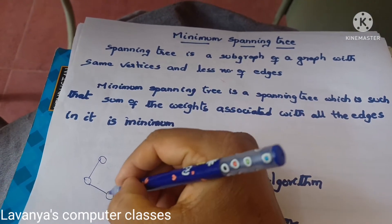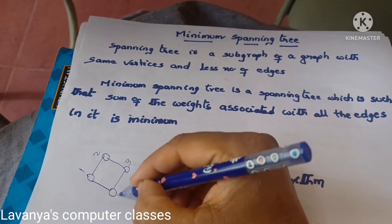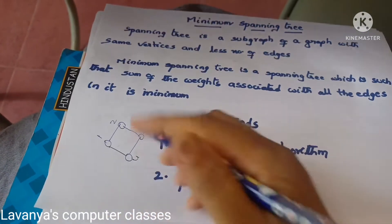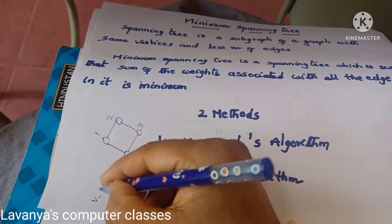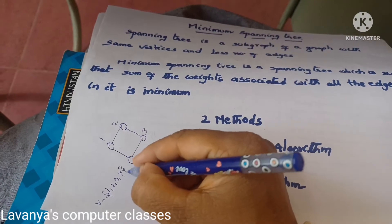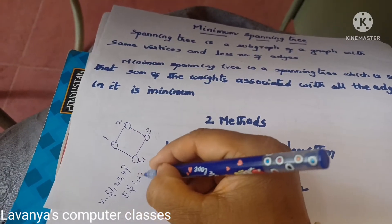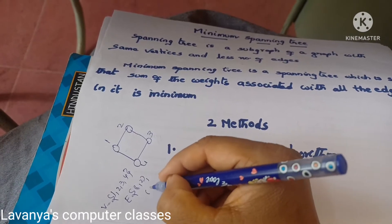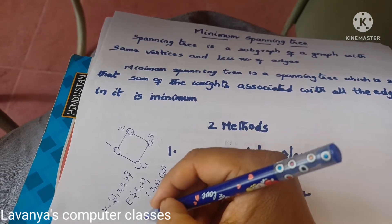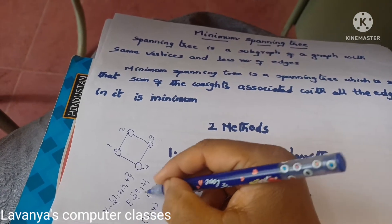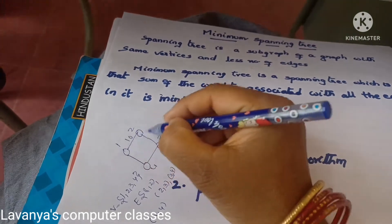For example, take a graph with 4 vertices: 1, 2, 3, 4. The vertex set V equals {1, 2, 3, 4}. The edge set E contains edges between them: (1,2), (2,3), (3,4), (1,4) — so 4 edges total. This is a graph with vertices and edges.